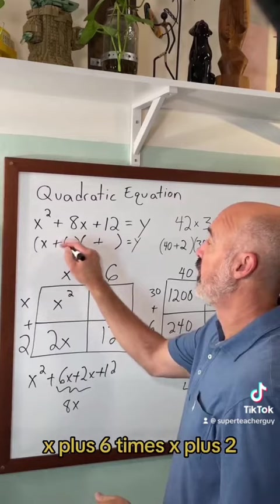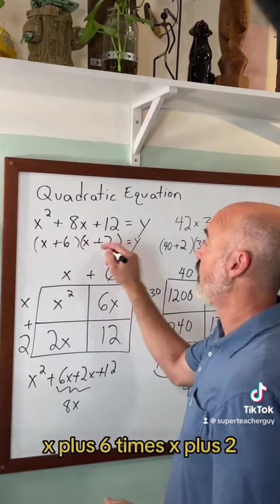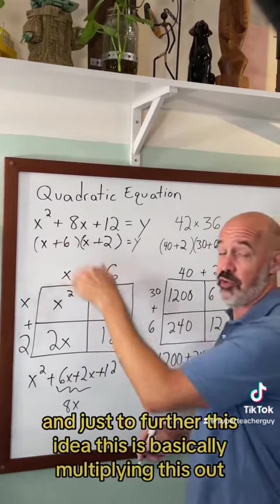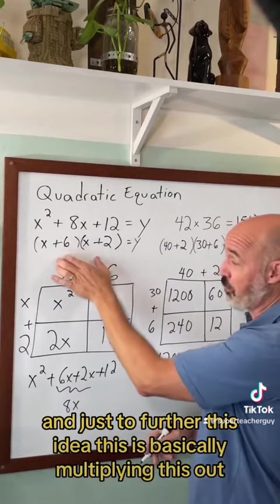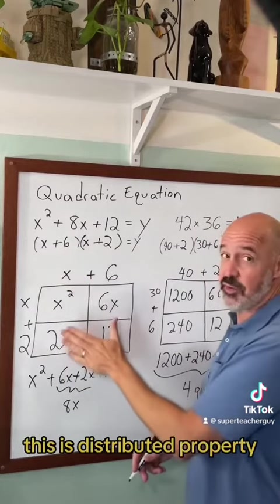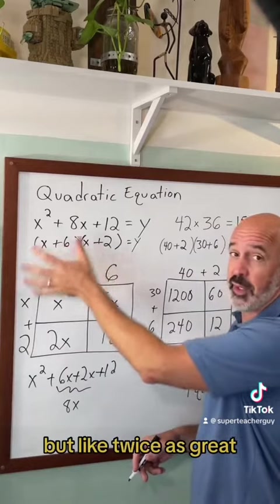x plus 6 times x plus 2. And just to further this idea, this is basically multiplying this out. This is distributed property but like twice as great.